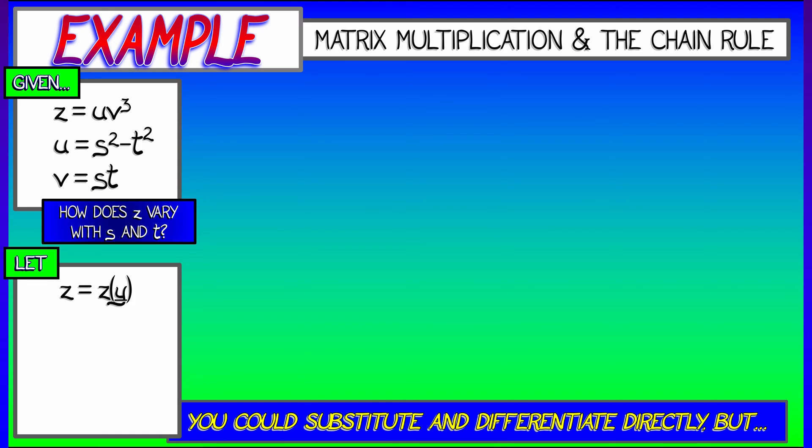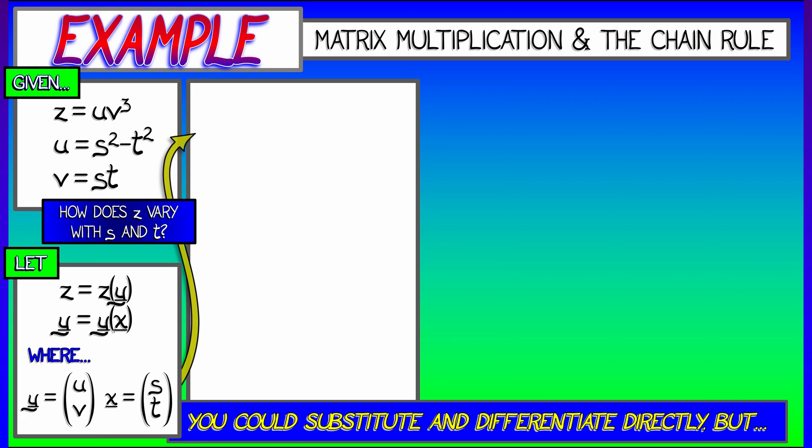Let's say that z depends on the variables y, and the y variables depend on x variables, where I'm going to declare y to be the vector of variables u and v, and x to be the vector of variables s and t. Now, let's start computing matrices of partial derivatives.